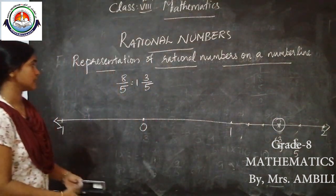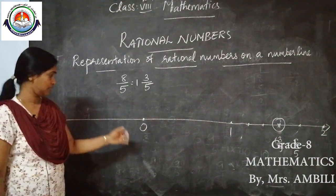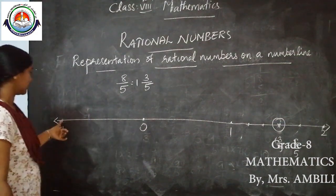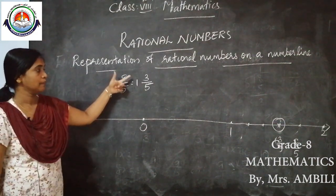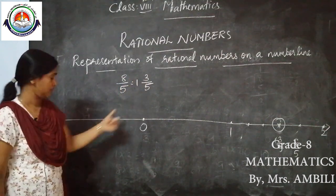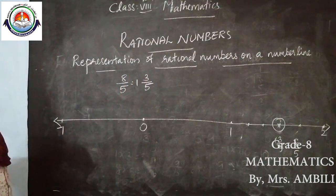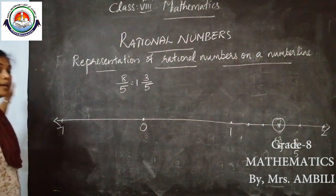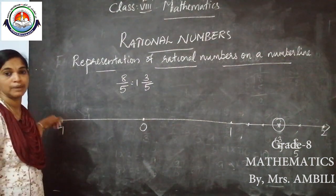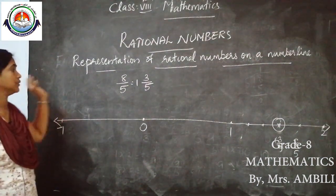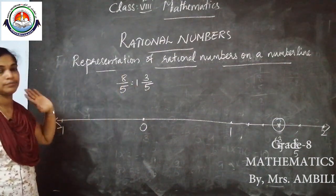Similarly, we can represent −8/5. That is −1 and 3/5. We extend the line, mark −2, and between −1 and −2 we mark −8/5.